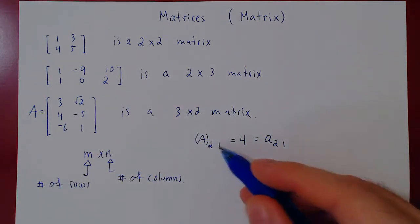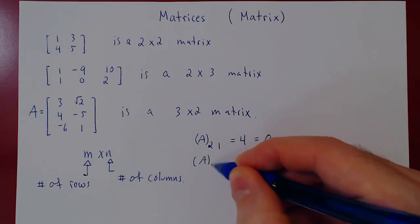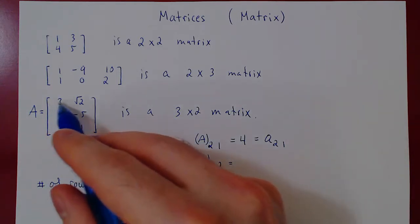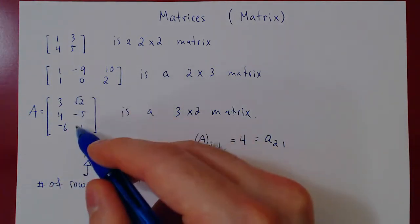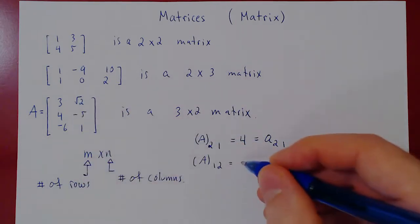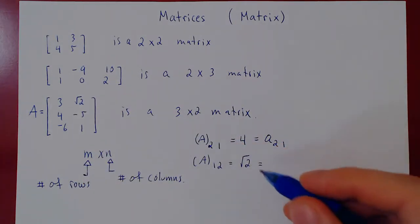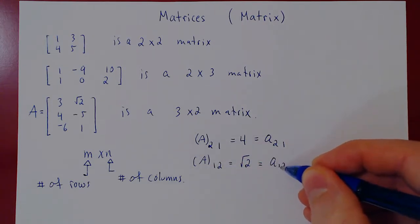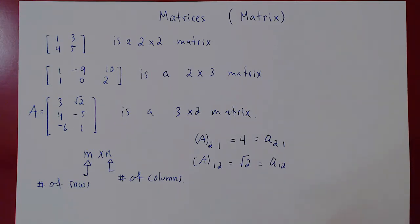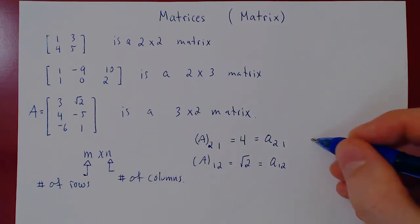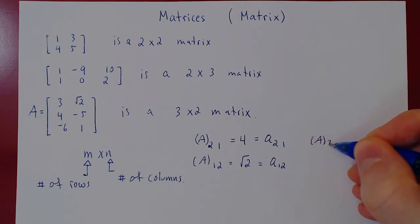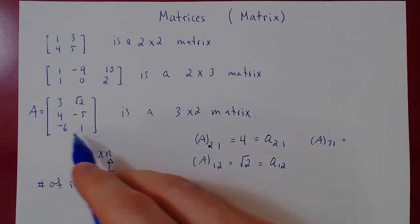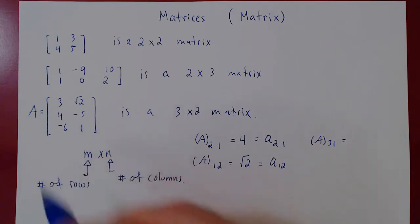If we flip the indices and look for A(1,2), this is the entry in A in the first row, second column, which is root 2. Similarly, A(3,1) is the entry in row 3, column 1, which is negative 6. We could also write these as lowercase a₁₂ and a₃₁.